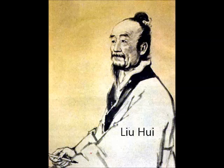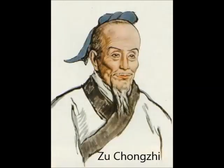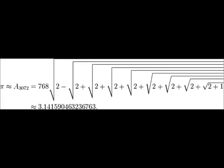Two ancient Chinese mathematicians, Lu Hui and Zhu Chongzi, also used the method of exhaustion to approximate the value of pi, but much more accurately than Archimedes. In the 3rd century AD, Lu Hui developed an iterative method for using polygons to approximate the circumference of a circle and used a 3072-gon to obtain the value of 3.1416 for pi.